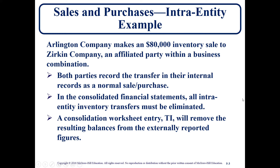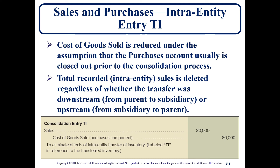In our example, Arlington Company makes an $80,000 inventory sale to Zirkin, an affiliated party within a business combination. Arlington is the parent company and Zirkin is the subsidiary. We're going to have to eliminate or get rid of this $80,000 sale because it's not really a real sale — it takes place between what is essentially the same entity on a consolidated basis.